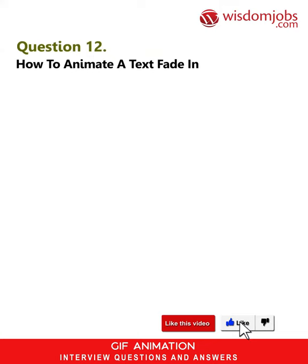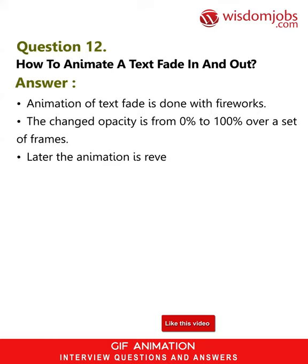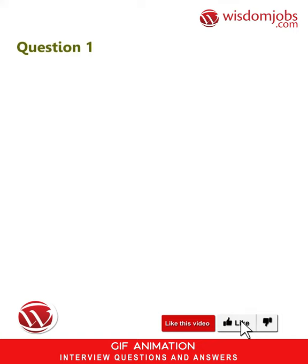Question 12: How to animate a text fade in and out? Answer: Animation of text fade is done with Fireworks. The changed opacity is from 0% to 100% over a set of frames. Later the animation is reversed with another text object with opacity from 100% to 0%.